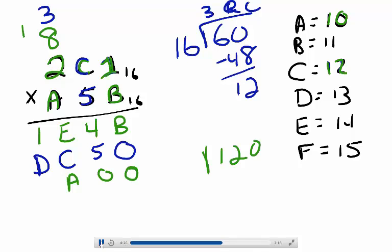So I need to find out how many times 16 divides into 120. 16 divides into 120 seven times with a remainder of 8. So I write the 8 here and I carry the 7.